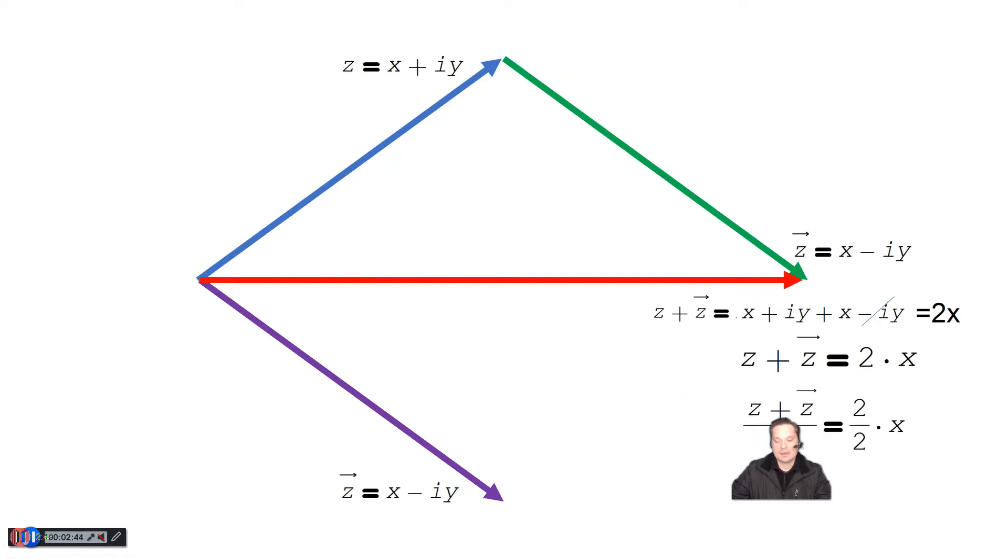And then after that, we just divide both sides by 2. So you're going to divide the right side by 2 and the left side by 2. On the right side, of course, those two 2s will cross off. And the result is that you have z plus z bar over 2 equals x.